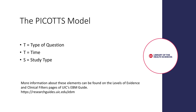Sometimes even using the PICO model is not enough to narrow your results. At times, expert searchers also use one or more additional elements. This extended PICO model takes into consideration the type of question you may have, such as therapy or diagnosis; time elements related to the study, such as retrospective or prospective research; and study type, such as randomized clinical trial or meta-analysis. You can learn more about these extra elements on the Levels of Evidence and Clinical Filters pages of the UIC Evidence-Based Medicine Guide.